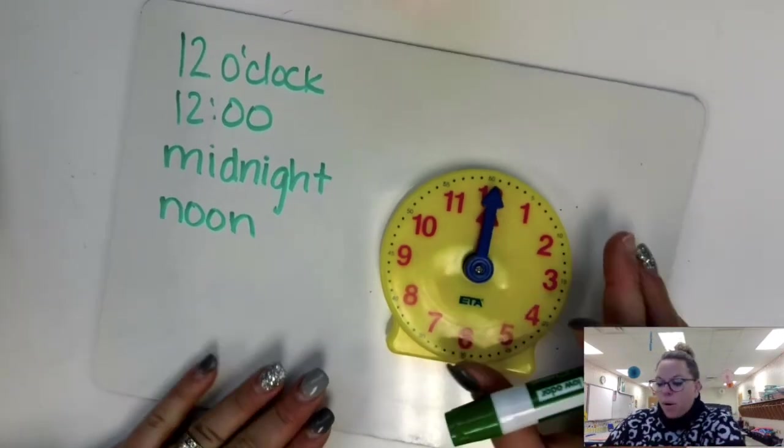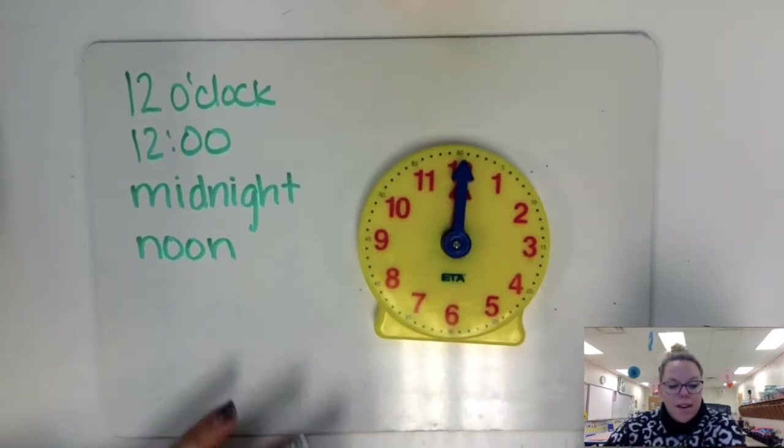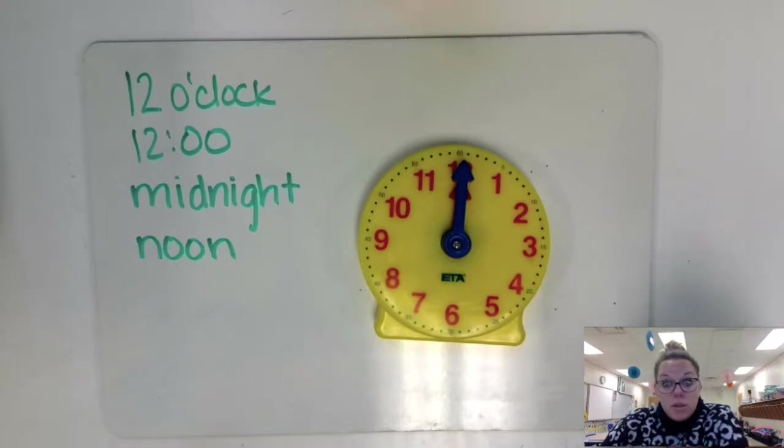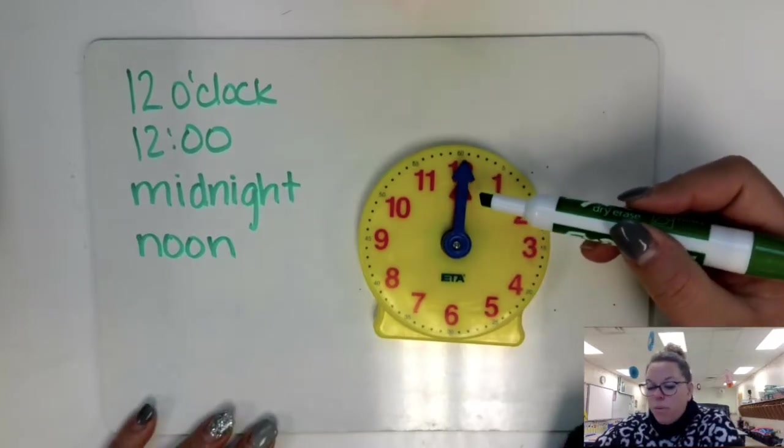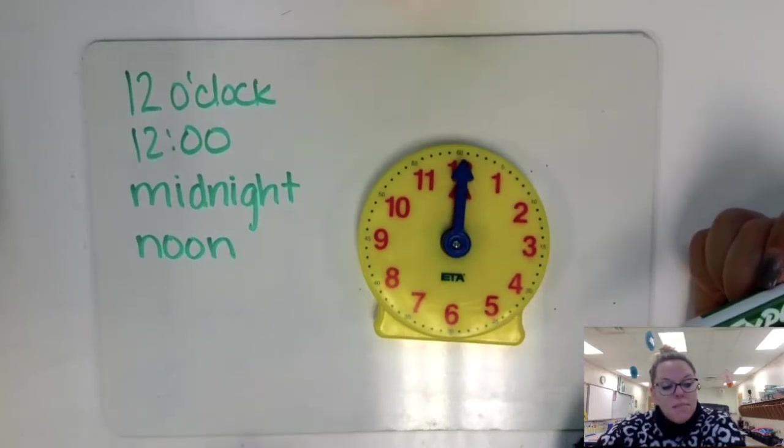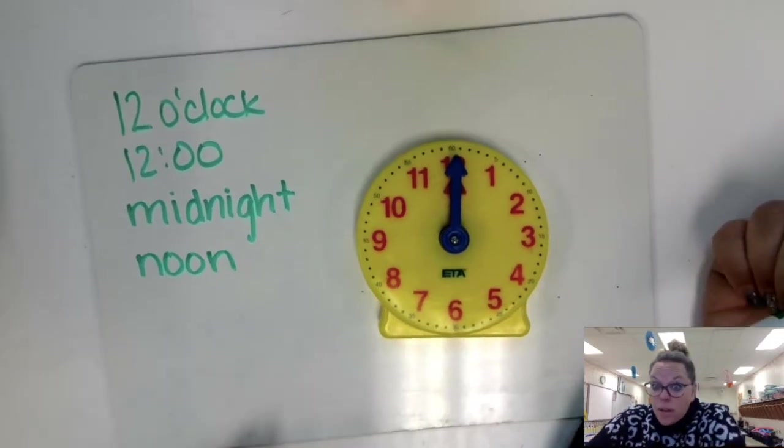At midnight, both of the hands are pointed to the 12 and it's the middle of the night. And what are we usually doing in the middle of the night? In the middle of the night, we're usually sleeping. At noon, both of the hands are pointed up at the 12 and it's the middle of the day. And what are we usually doing at noon?